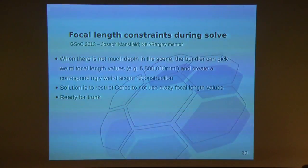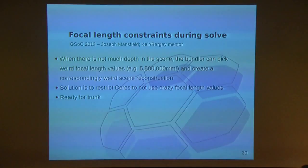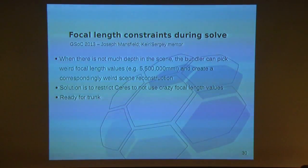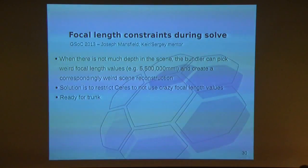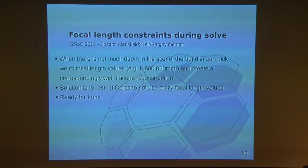This brings us to the Summer of Code work. We did a couple of things this summer with student Joseph Mansfield. One of the first things Joseph worked on is focal length constraints during solve. If you have a long shot with a long focal length and not much depth information, the bundler — the final step of reconstruction — can see that making the focal length really large makes the error slightly smaller, giving you crazy focal length values. We added a constraint system so you can say, don't make the focal length more than 5,000 millimeters, for example. This isn't quite on trunk yet, but it's pretty much ready to go and should be merged soon.